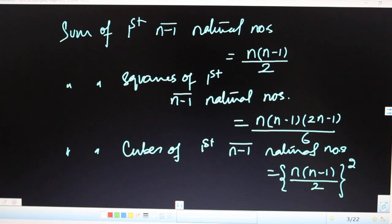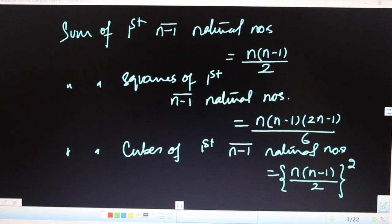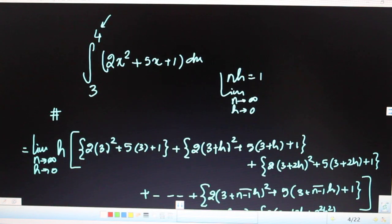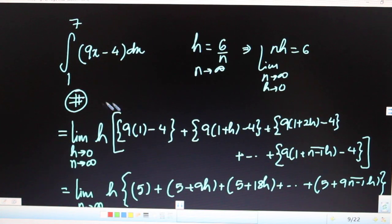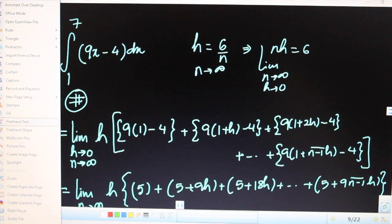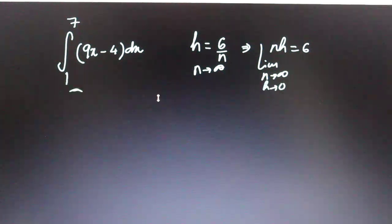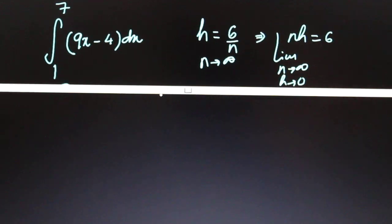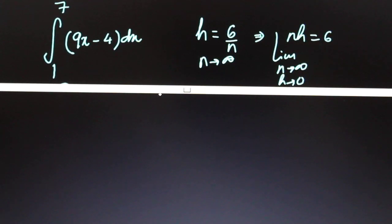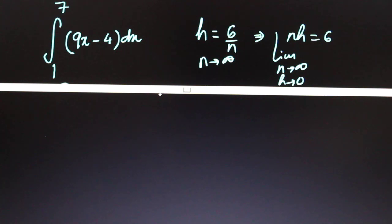Are you ready for the questions? Good luck — it's very simple. If you go calmly you'll understand it and make no mistakes. The first question is linear. The question is: evaluate the integral from 1 to 7 of (9x - 4) dx using limit of a sum. h equals the upper limit minus the lower limit divided by n, so h = (7 - 1) / n = 6/n.